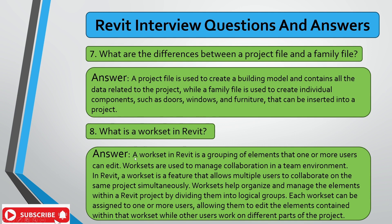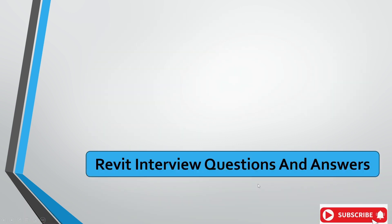The next question is: what is a workset in Revit? A workset is a grouping of elements that one or more users can edit. If many people are working on a project, they can manage their work through worksets. Workset is a Revit feature that allows multiple users to collaborate on the same project simultaneously. Worksets help organize and manage elements within a Revit project by dividing them into logical groups, and each workset can be assigned to one or more users to edit while others work on different parts.